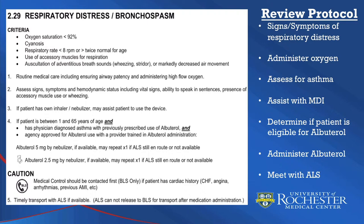Let's review the respiratory distress bronchospasm protocol one more time. First, assess the patient for signs and symptoms of respiratory distress. If the patient meets the criteria listed in the protocol, provide routine medical care including high flow oxygen. Next, assess signs and symptoms and hemodynamic stability including vital signs, the ability to speak in full sentences, the presence of accessory muscle use, and adventitious lung sounds such as wheezing or stridor.